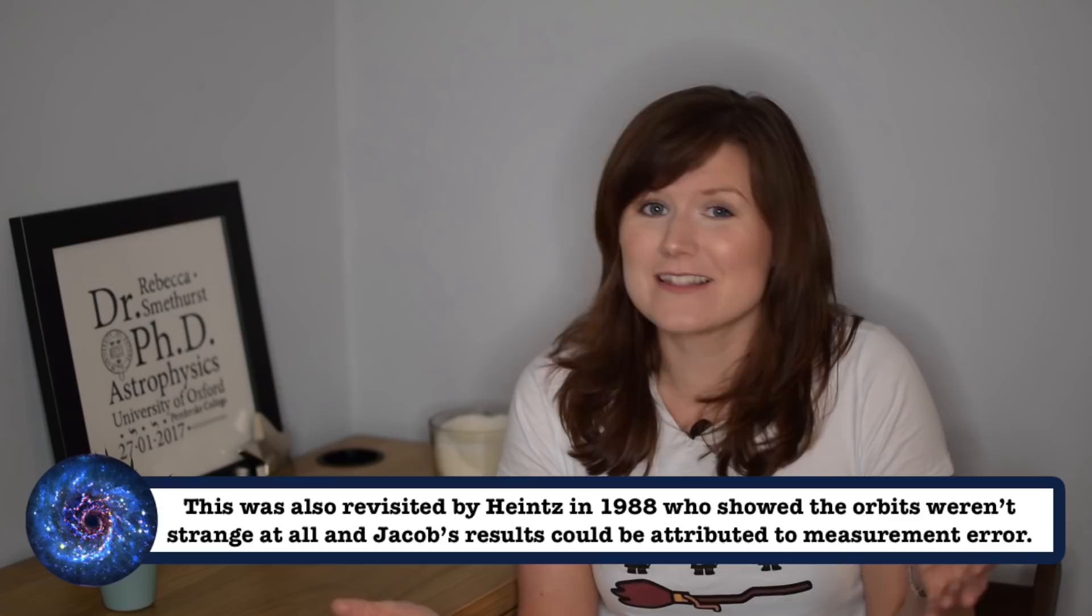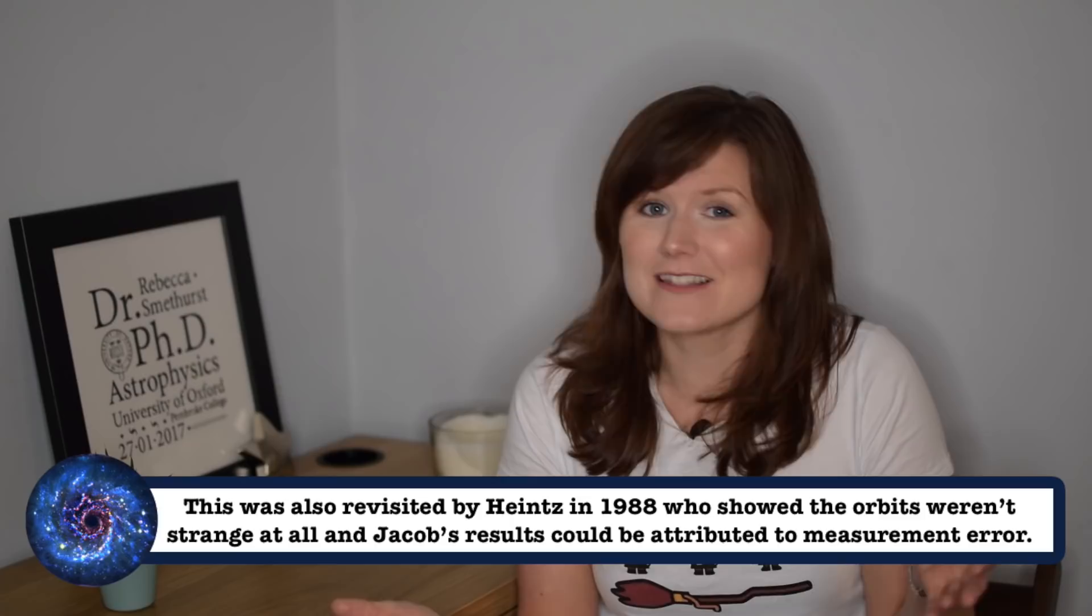But that was disproven in 1899 by Forrest Ray Moulton, who pointed out that if you actually did the mathematics, such a planet would have a completely unstable orbit and couldn't possibly exist.